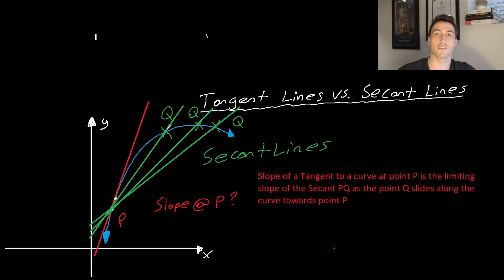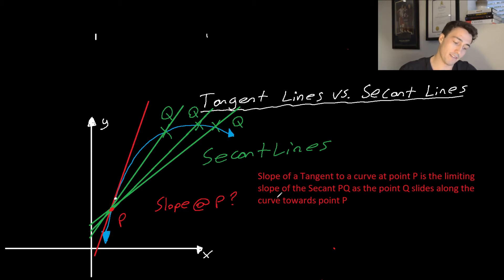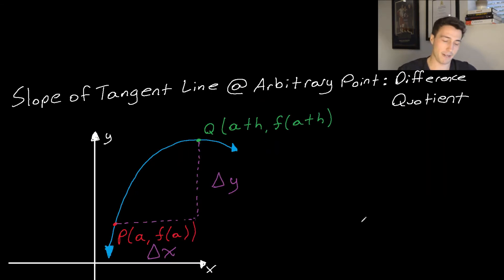We can define the tangent line in terms of secant lines. The formal definition is: the slope of a tangent to a curve at point P is the limiting slope of the secant PQ as point Q slides along the curve towards point P. So as Q moves toward P, the secant slope gets closer and closer to the slope of the tangent line. That limiting factor of moving Q towards P is what creates the tangent from the secant line.